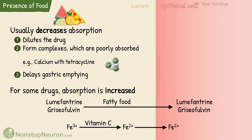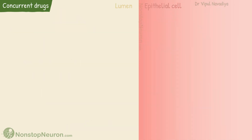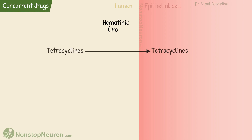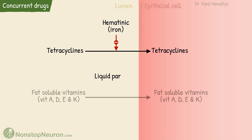Similar to food, concurrently administered drugs can also affect absorption. For example, hematinics containing iron reduce the absorption of tetracyclines. Liquid paraffin decreases the absorption of fat-soluble vitamins A, D, E, and K.